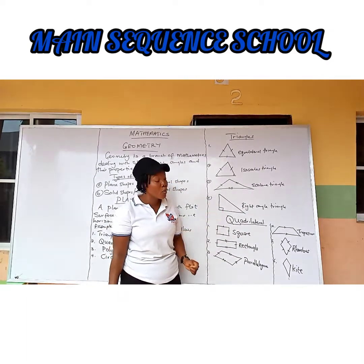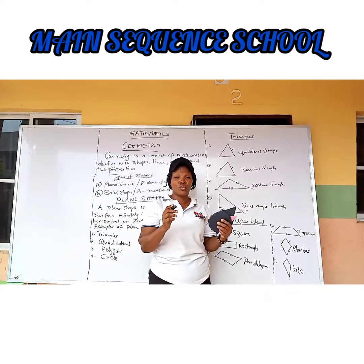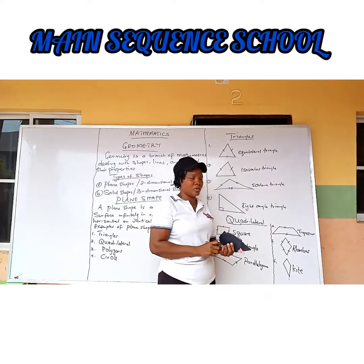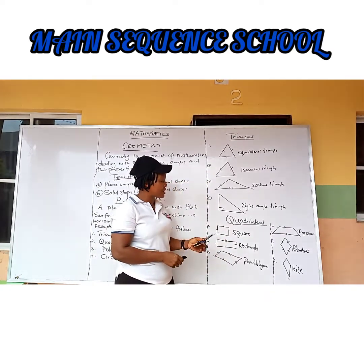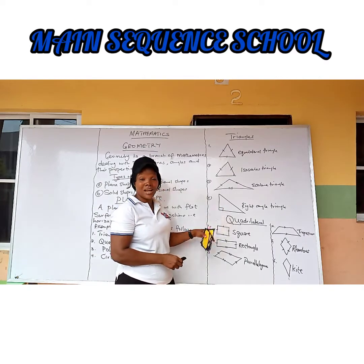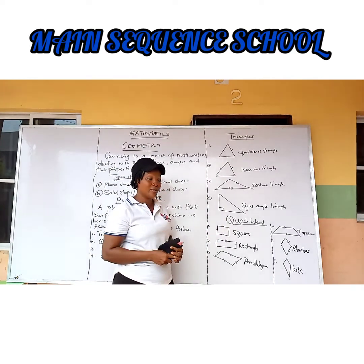Fourthly, we have a right angle triangle. The right angle triangle has one of its angles equal to 90 degrees.